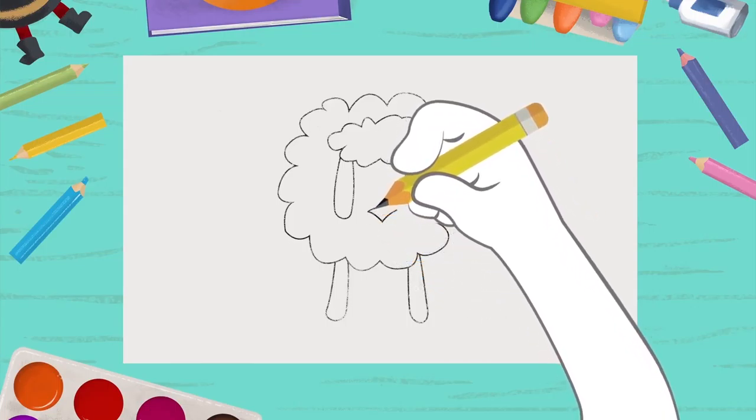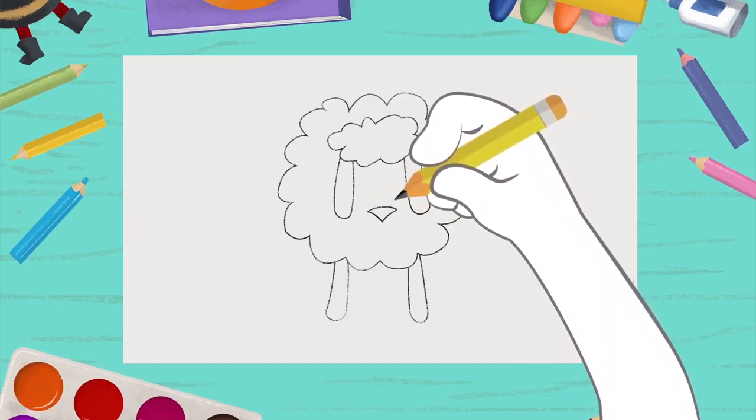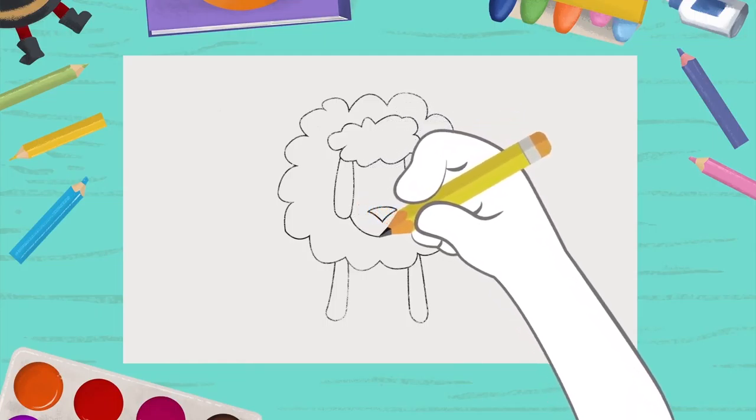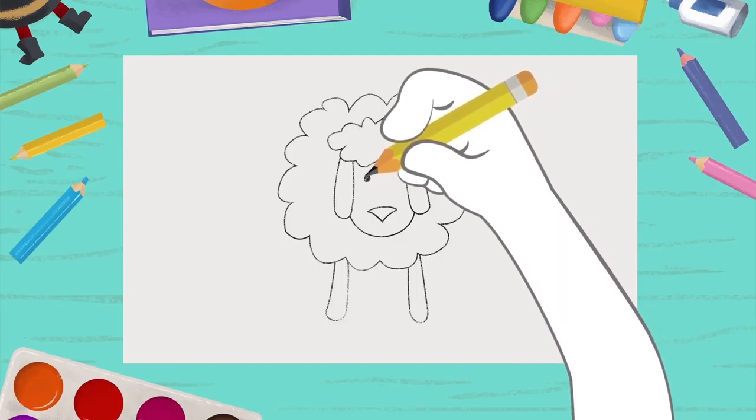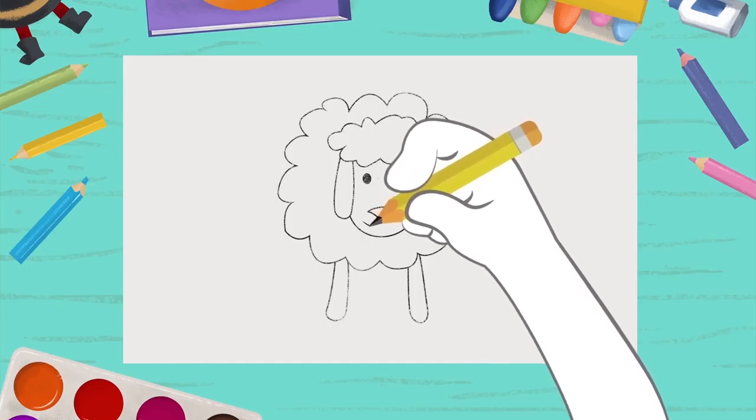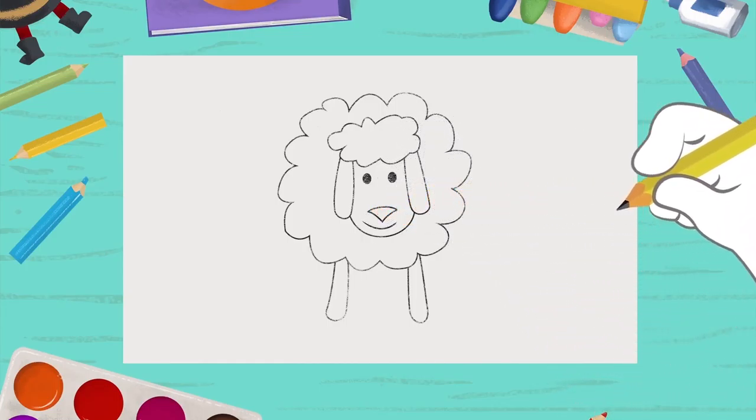Connecting this one here, you make a nose. This dot to this one. Now, just draw the eyes. The mouth. And our little sheep is ready.